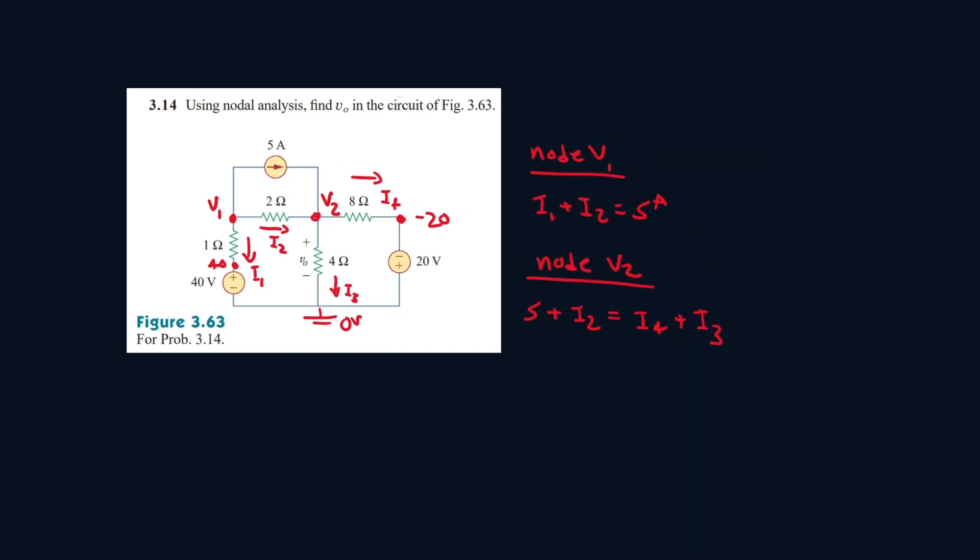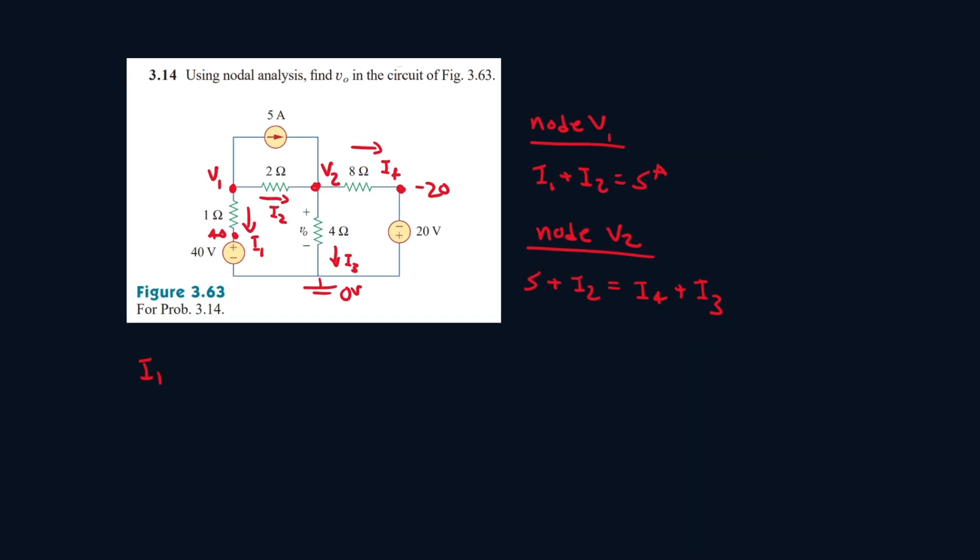So now let's find our I1 will be equal to V1 minus 40, all over 1. So high potential to low potential, all over 1. If this voltage source wasn't here, then it will be V1 minus 0. Then we have I2, high potential, V1 minus low potential, V2, so V1 minus V2, all over 2.